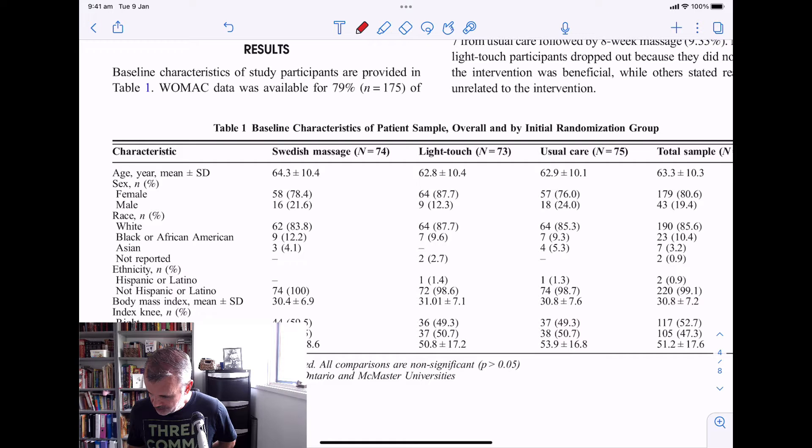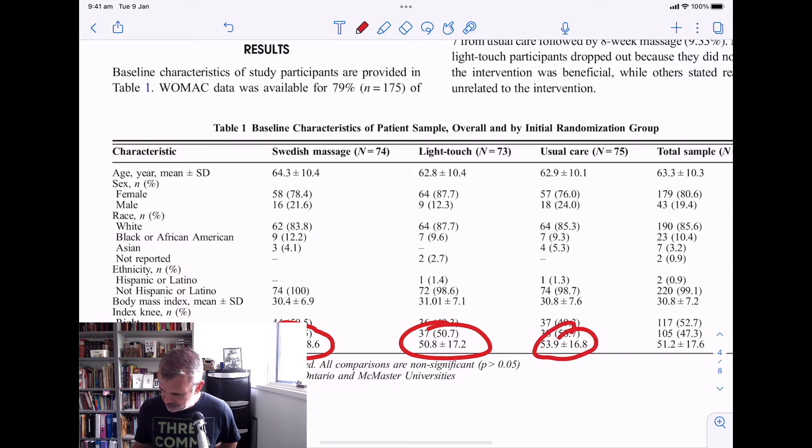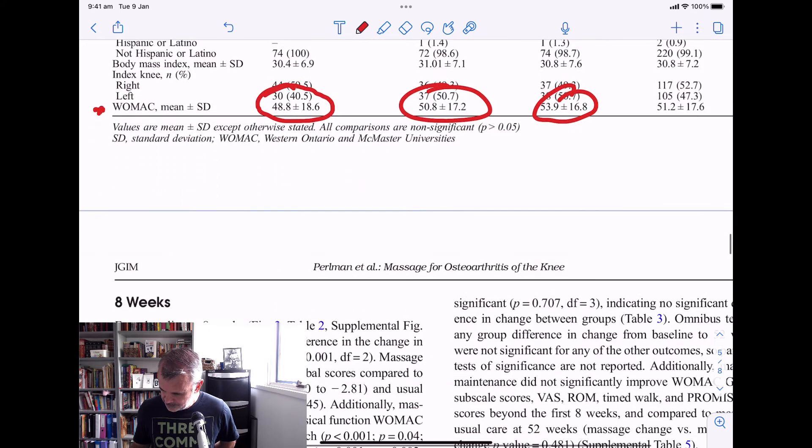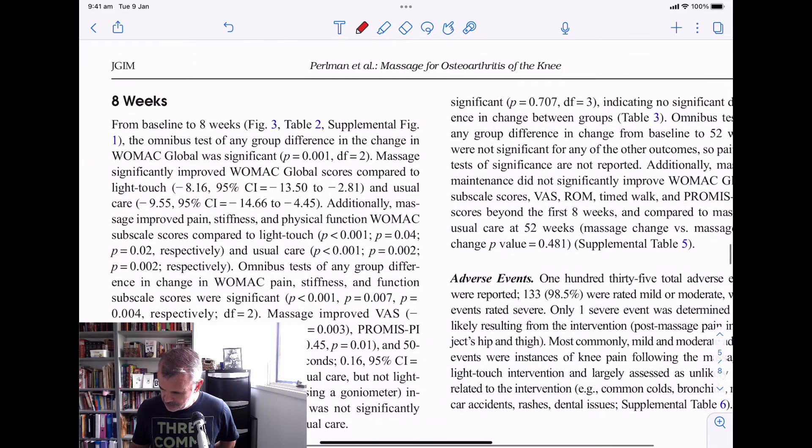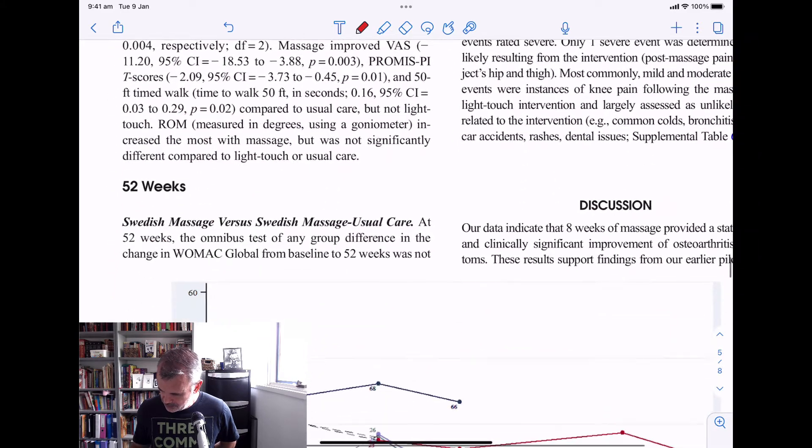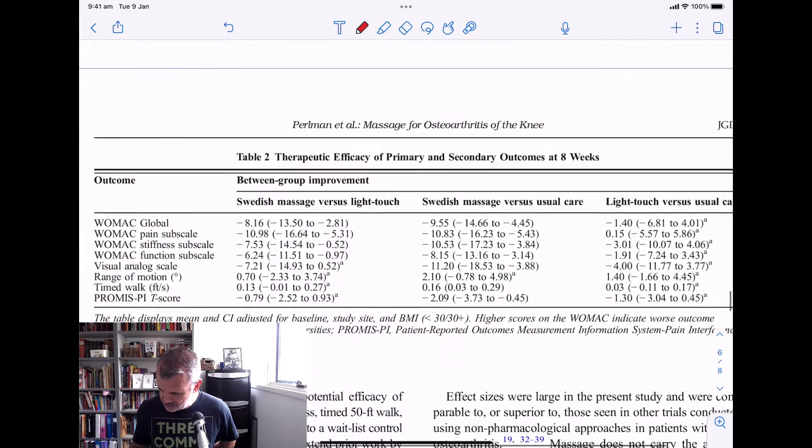So the results. When they first started Baseline, so the WOMAC is the Western Ontario and McMaster University's score. So the Swedish massage, 74 people started that. Score out of 100. I'd say 100. I think so. We got 48. Light touch for 50. And usual care, 53. So pretty similar. And then, let's have a look at these results.